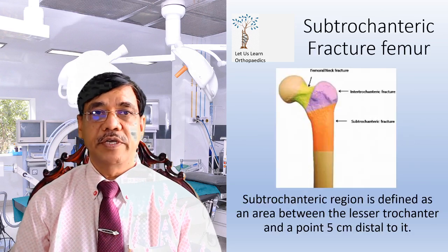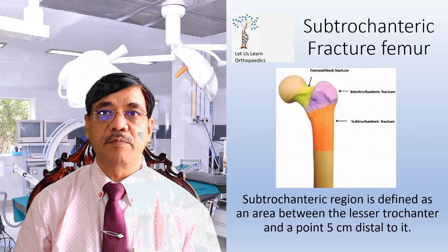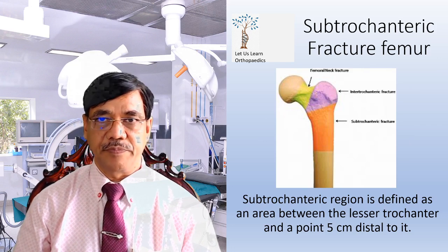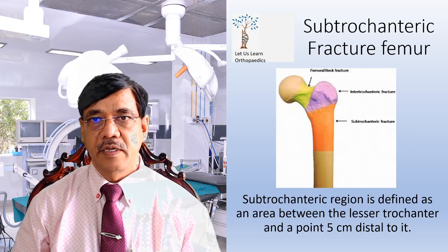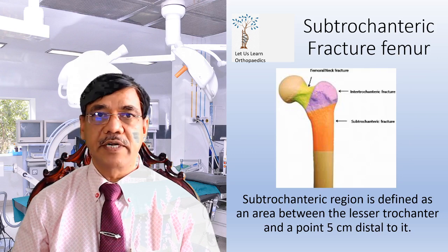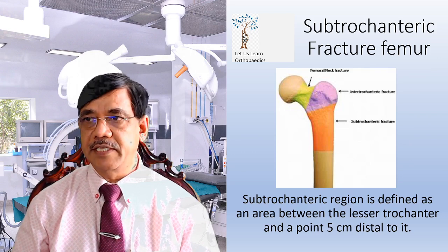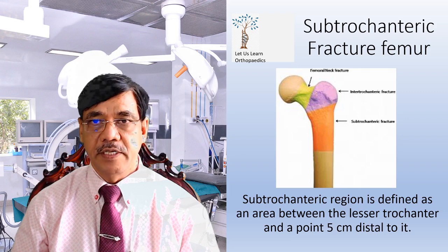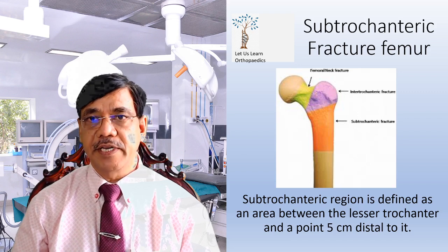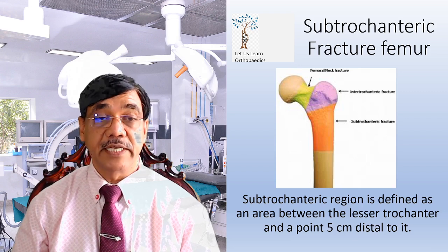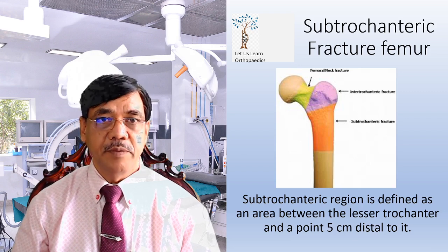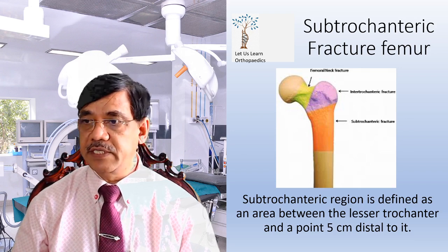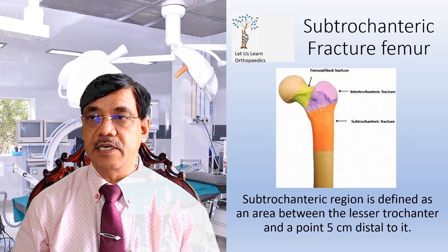Dear students, today we are going to discuss mainly the subtrochanteric fracture femur. As you can see in this particular diagram, the subtrochanteric area is shown in orange. The subtrochanteric region is defined as the area between the lesser trochanter and 0.5 cm distal to it.